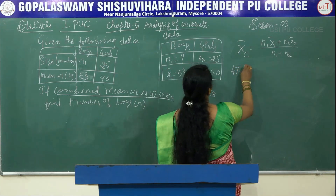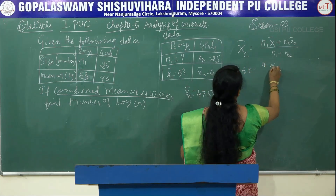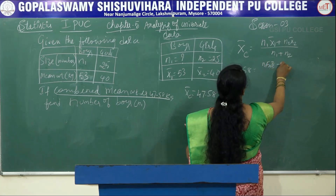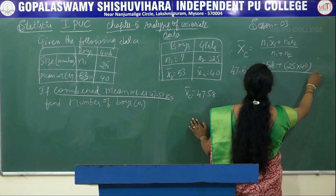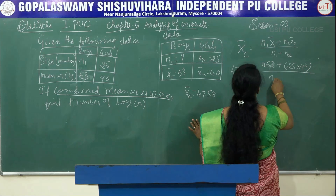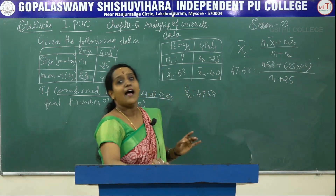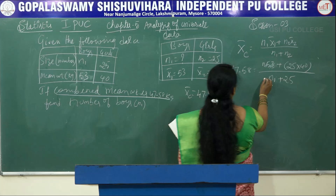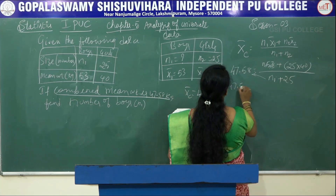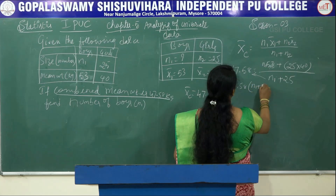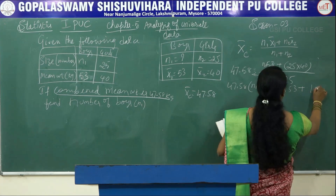Using the same formula and substituting: 47.58 = (n1 × 53 + 25 × 40) / (n1 + 25), which gives 47.58 = (53·n1 + 1000) / (n1 + 25).